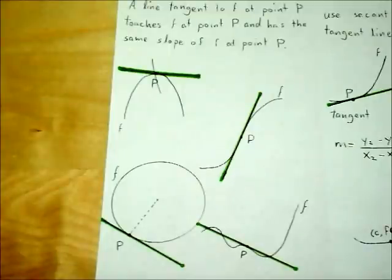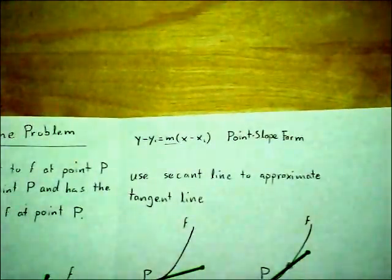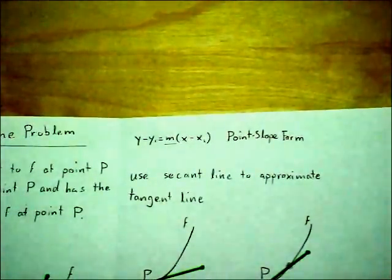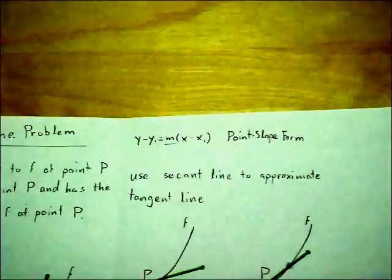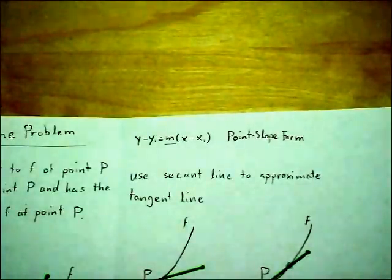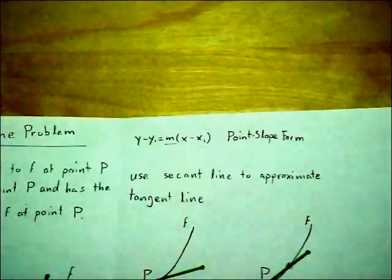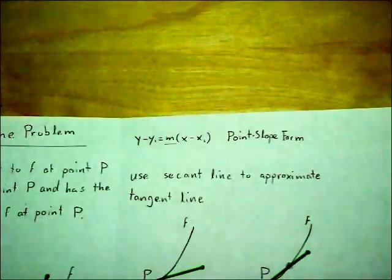So our challenge is finding the tangent line. Tangent lines are always straight lines, so to find one's function we can use the point-slope formula. This presents a problem, though, because although we know point p for the tangent line, we don't know the slope if the function f is a curve.